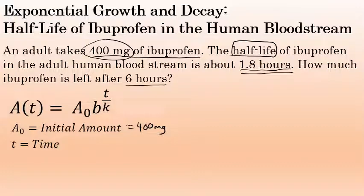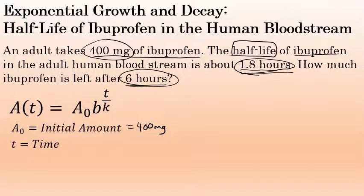T is the time, and depending on the context of the problem, time could be measured in seconds, minutes, hours, years, or decades. In this problem we are given the half-life of ibuprofen in hours — 1.8 hours — and we're trying to determine how much is left after six hours, so we're measuring t in hours. T will be equal to six.